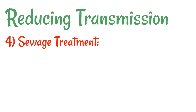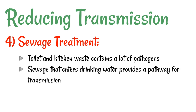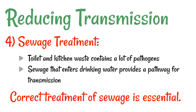The other method is sewage treatment. Toilet and kitchen waste contain quite a lot of pathogens, and if sewage managed to enter drinking water, that's a really obvious pathway for transmission. Correct treatment of sewage is essential to make sure that the dirty water that leaves the system isn't then going to be able to enter the water that somebody consumes.